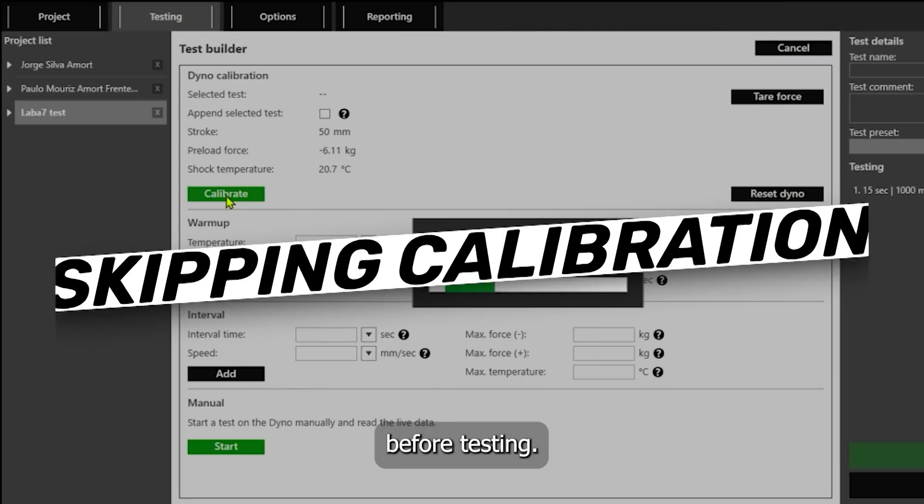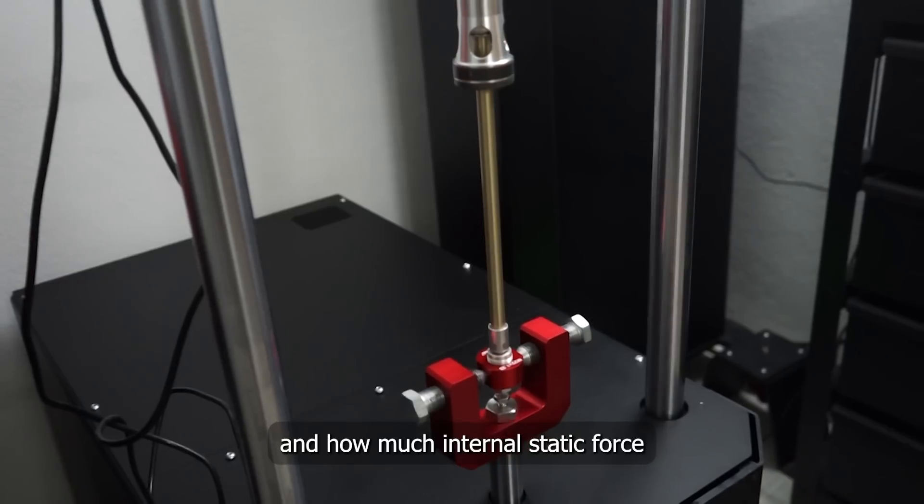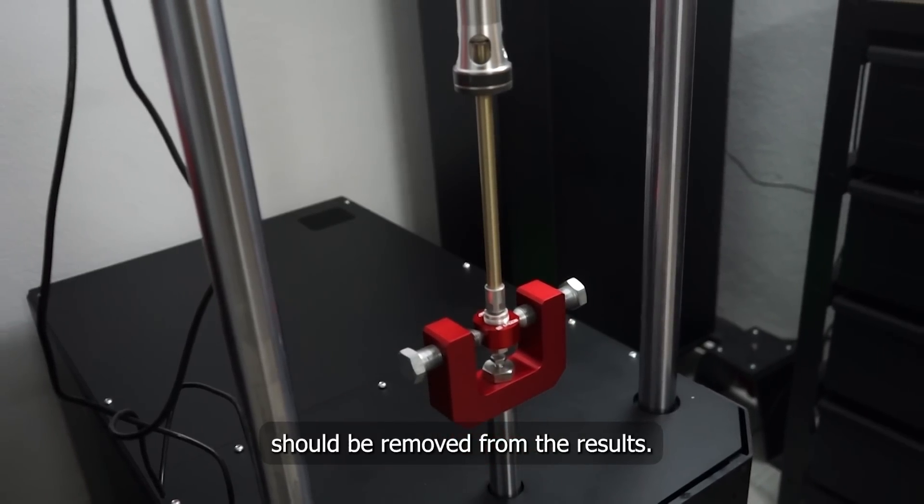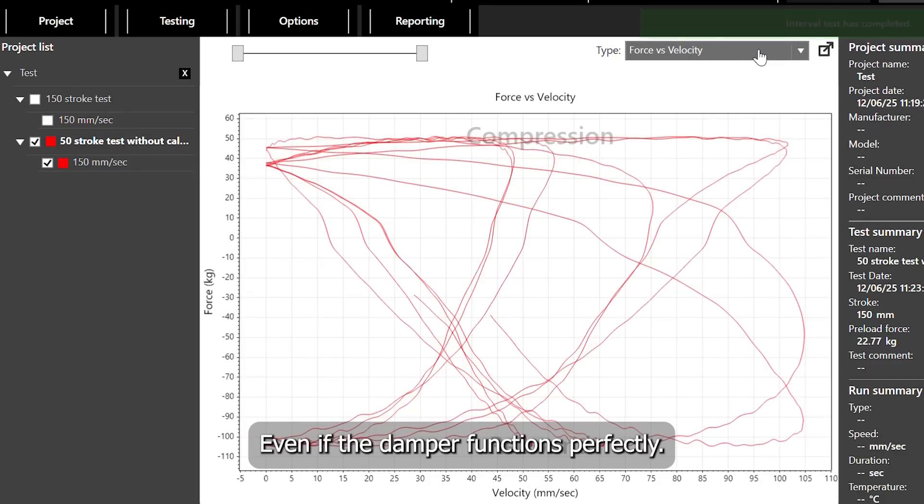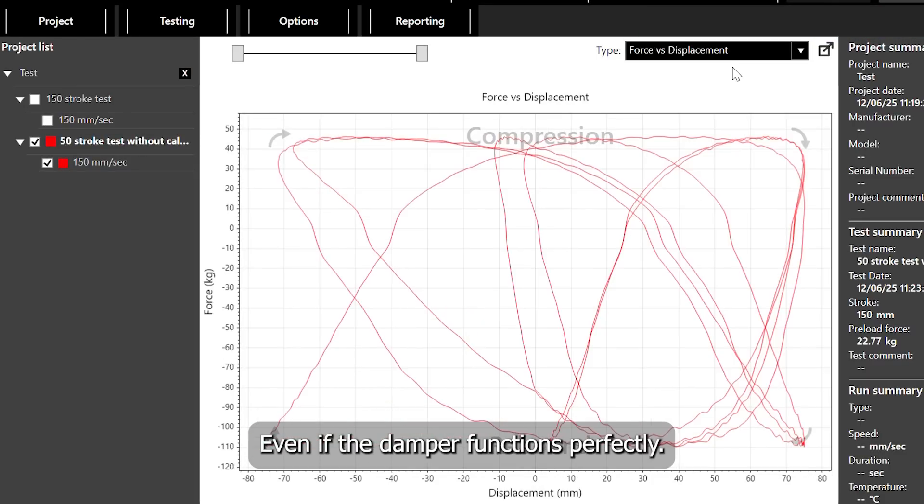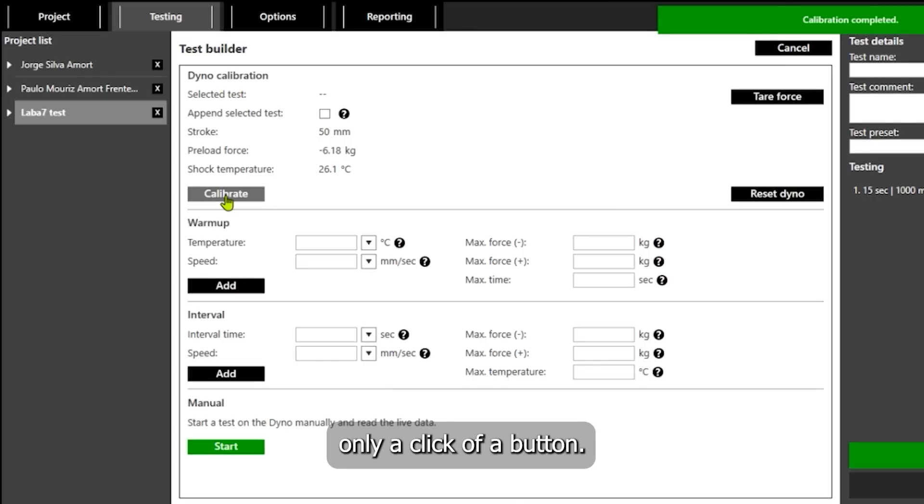Number 4 is not calibrating the machine before testing. Calibration tells the dyno and the software two things, what stroke you are using and how much internal static force should be removed from the results. If you skip calibration the force curves might look wrong even when the damper functions perfectly. Always calibrate before you start testing. It's automatic and requires only a click of a button.